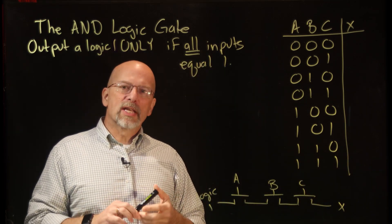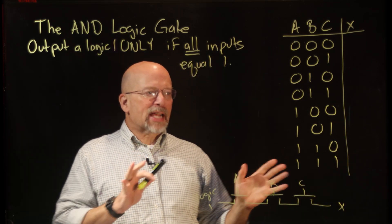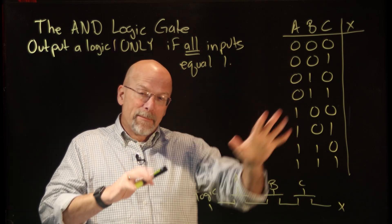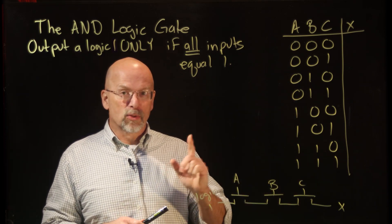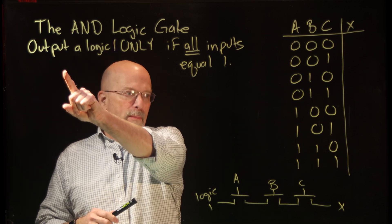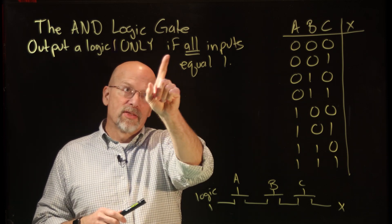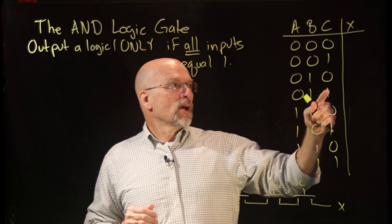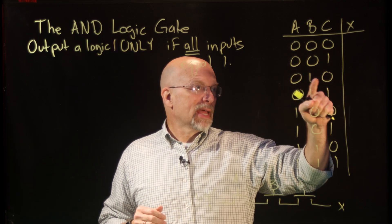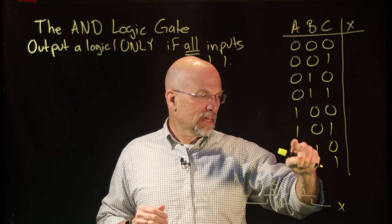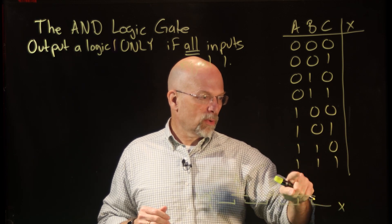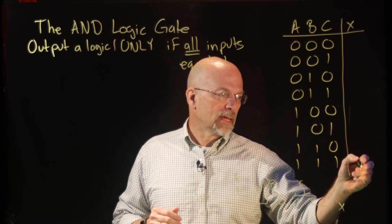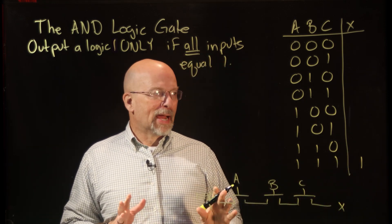What does the output look like? When is X equal to a 1 based on the conditions of these inputs? Well, the only time we're going to output a 1 is if all the inputs are equal to a 1. So if we go through all of these, the only case where all three of them are equal to a 1 is this last case here: 1 and 1 and 1 equals 1.